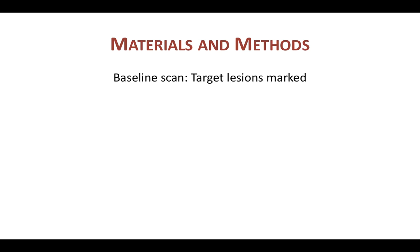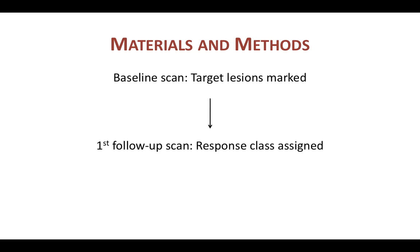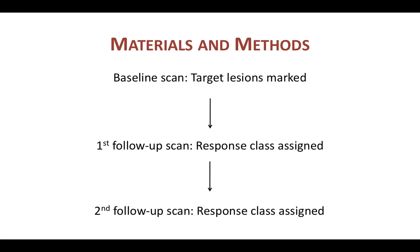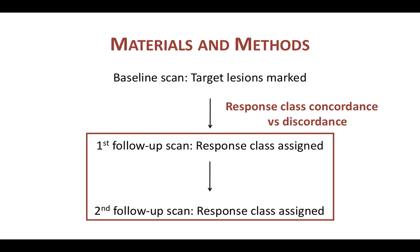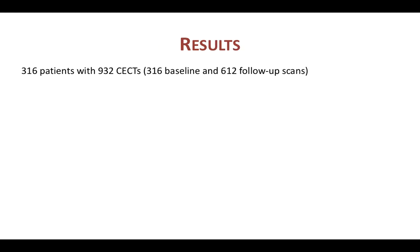How exactly did they do this? Imagine a patient with a baseline scan in which target lesions are marked; the patient gets chemotherapy, a follow-up scan is obtained, and a response class is assigned — for example, partial response. After more cycles, there is a second follow-up scan and again a response class is assigned, say stable disease. At the baseline scan the target lesion concordance between three different radiologists was examined, and on follow-up scans the response class concordance was assessed. There were 316 patients in the study with 932 contrast-enhanced CTs, so on average each patient had around two follow-up scans.